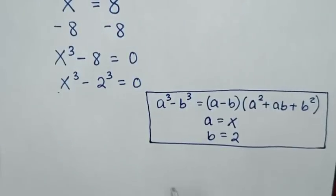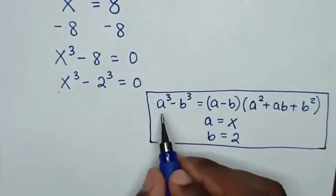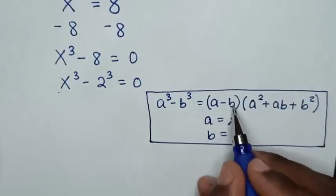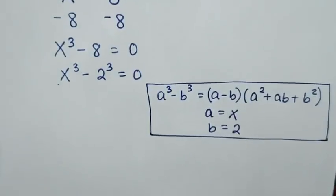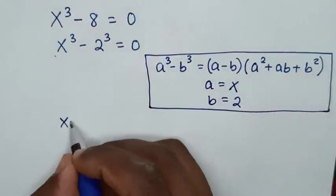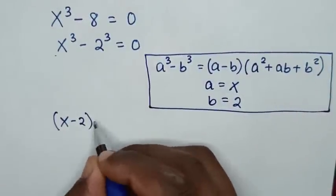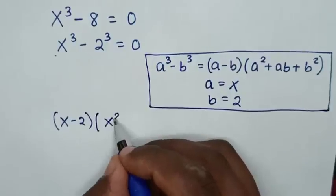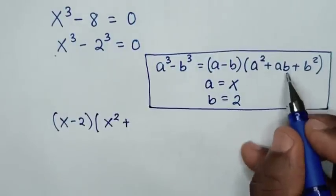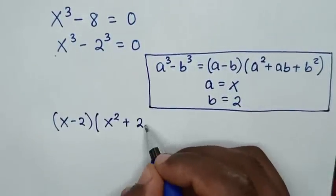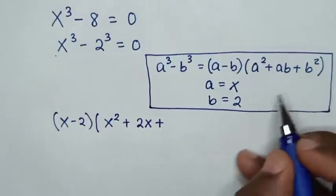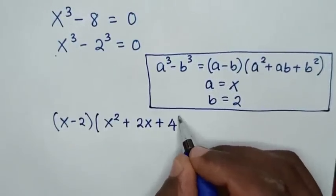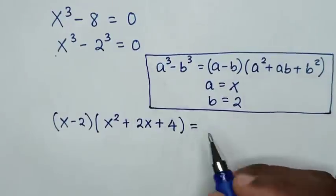Because this part is in this form, therefore applying the identity gives us (x - 2)(x² + 2x + 4) = 0. Here a² = x², ab = 2x, and b² = 2² = 4.